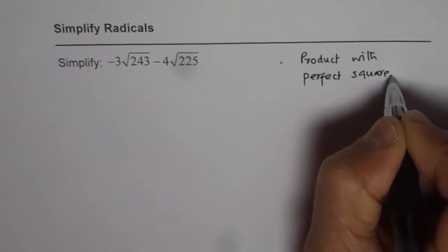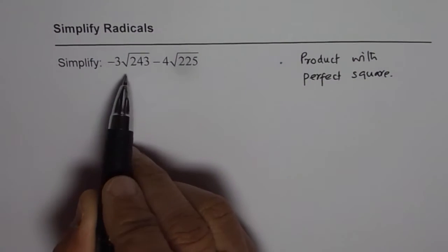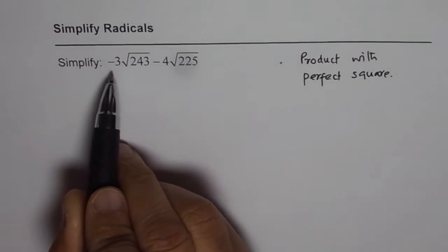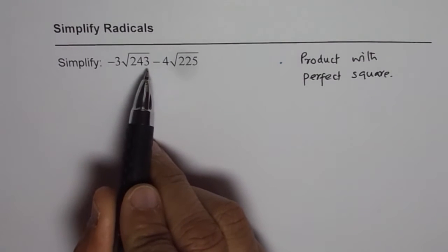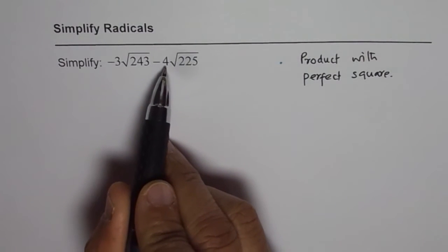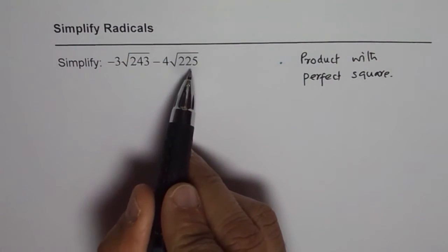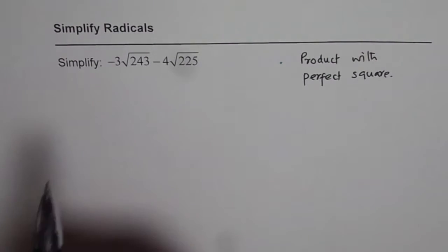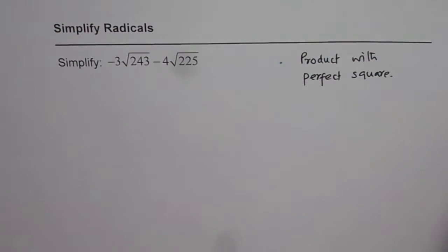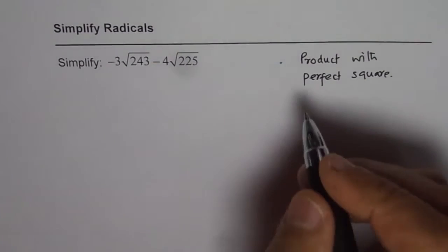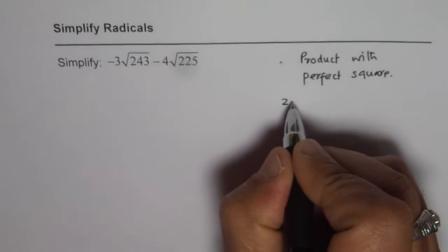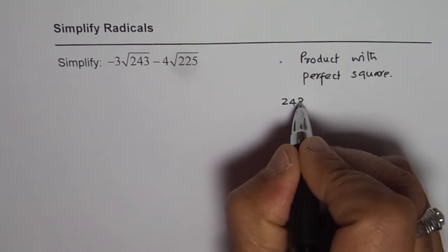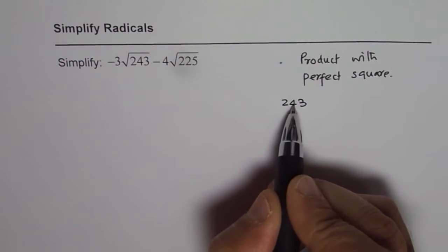That is the kind of strategy. So we have minus 3 square root of 243 minus 4 square root of 225. Let's begin by finding the factors of these numbers, starting with 243.